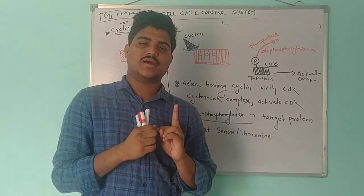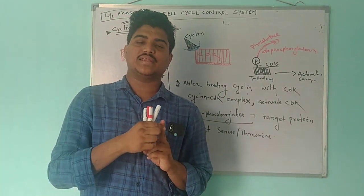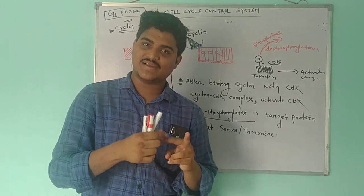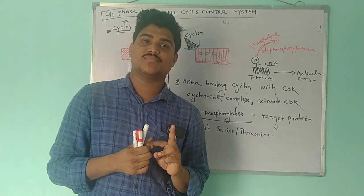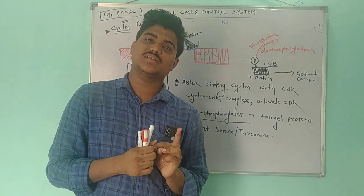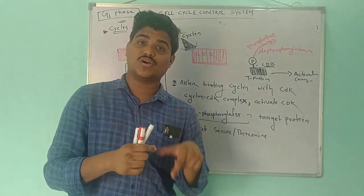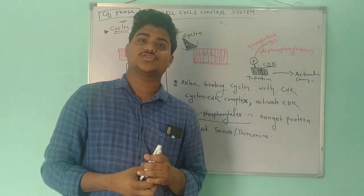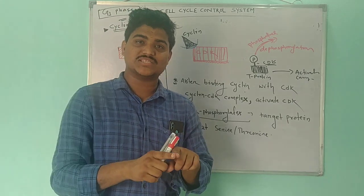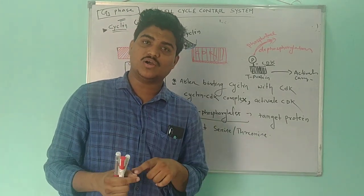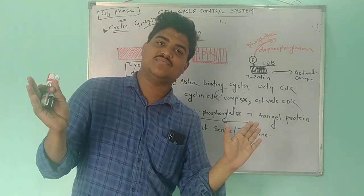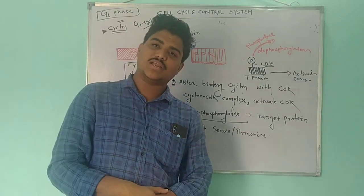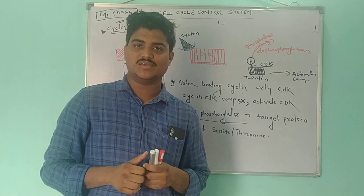To summarize: two proteins — cyclin and CDK. Cyclin is a regulatory protein that binds with CDK. After binding, the cyclin-CDK complex activates CDK, and that CDK causes phosphorylation of target proteins. The phosphorylated protein carries out the function needed at that stage of the cell cycle. After that, cyclin is degraded — so there is no complex between cyclin and CDK, and CDK undergoes inactivation. The previously phosphorylated target protein then undergoes dephosphorylation by the enzyme phosphatase. Thank you.